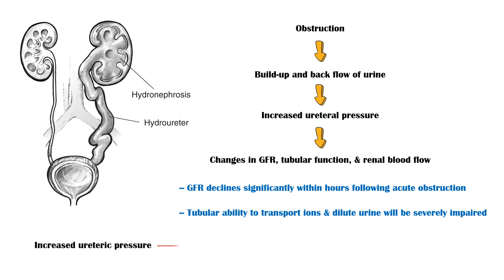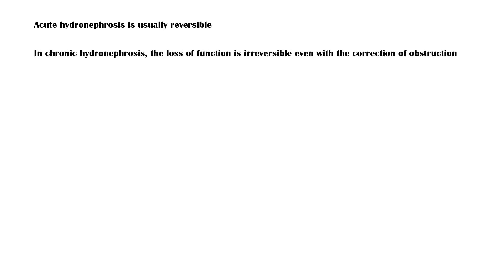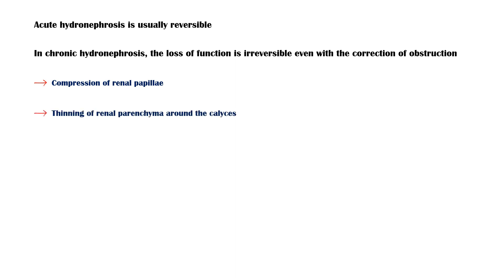In addition, increased ureteric pressure will lead to pylovenous and pylolymphatic backflow. Acute hydronephrosis is usually reversible. However, in chronic hydronephrosis, the loss of function may be irreversible even with correction of the obstruction. Common findings include compression of the renal papilla, thinning of the renal parenchyma around the calyces, and cortical atrophy.